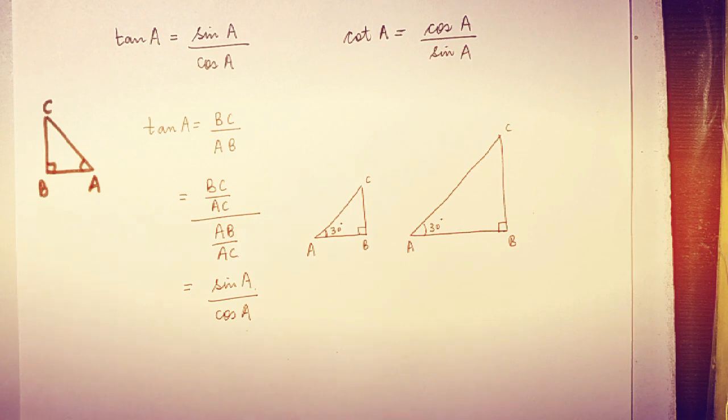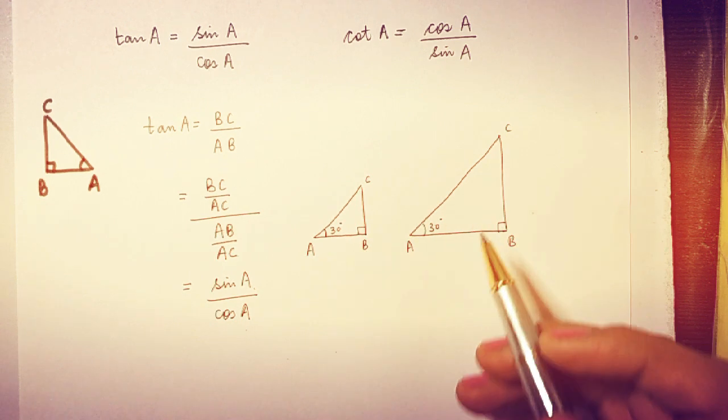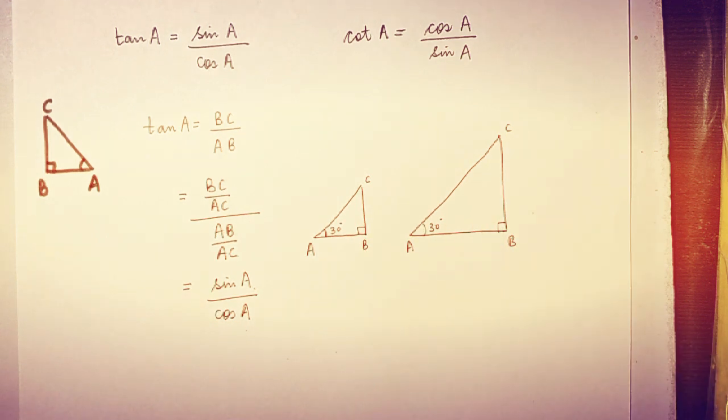And one other thing that you have to remember is that these are trigonometric ratios. The sides change from triangle to triangle, but the ratios won't change. Suppose sin 30° in this triangle and in another triangle, one small one big, the sin 30° would remain the same. It doesn't depend upon the length of the triangles. So until your angle is the same, the ratio will remain the same.